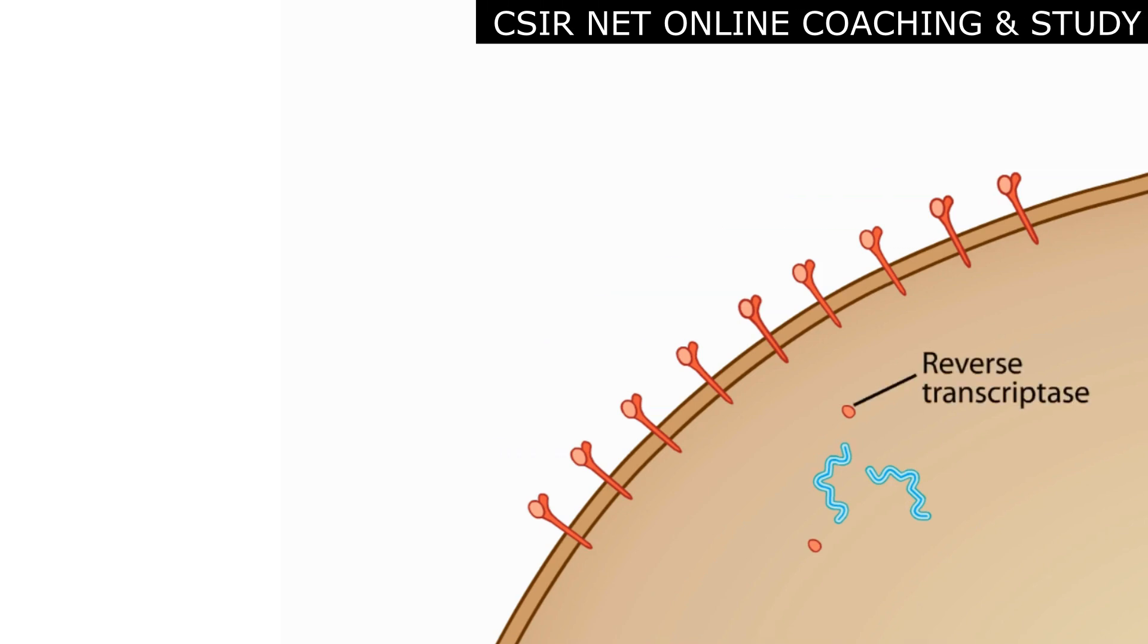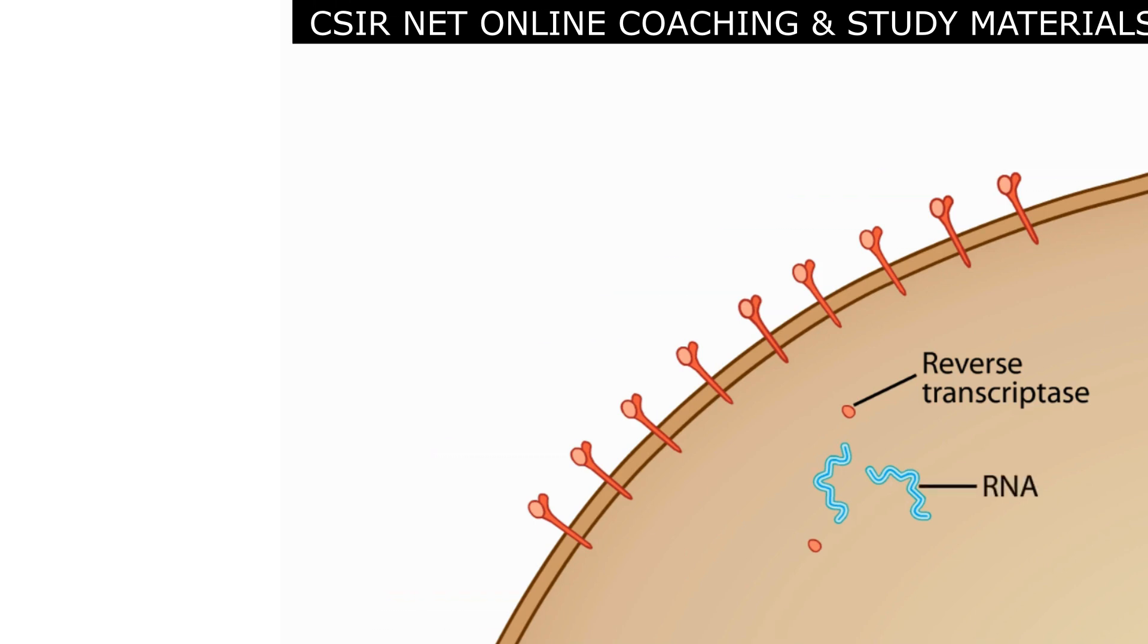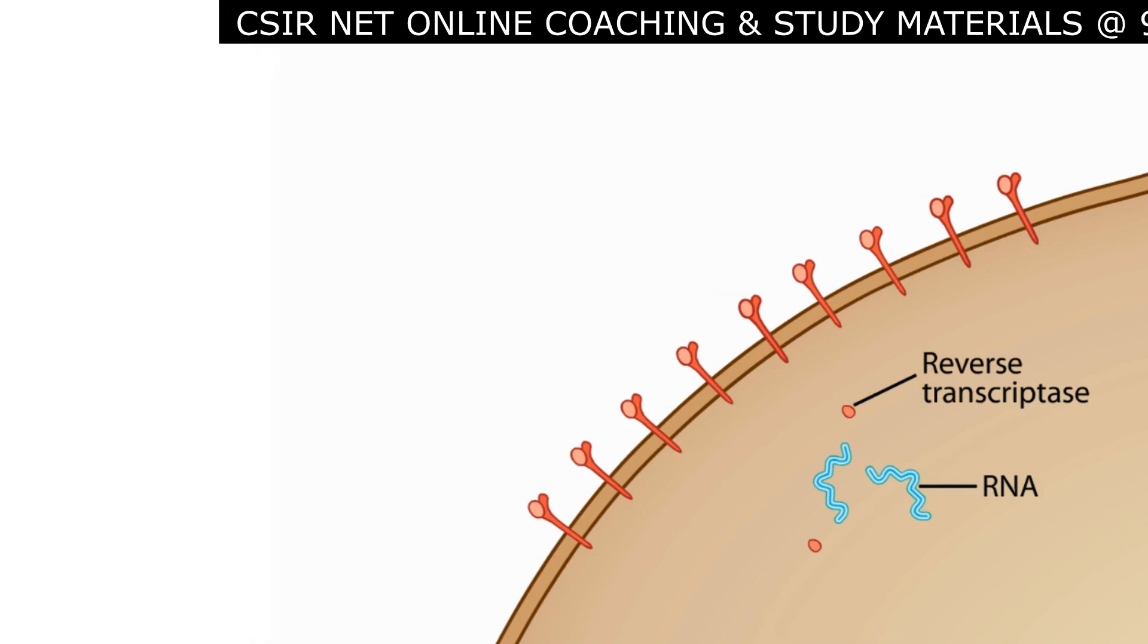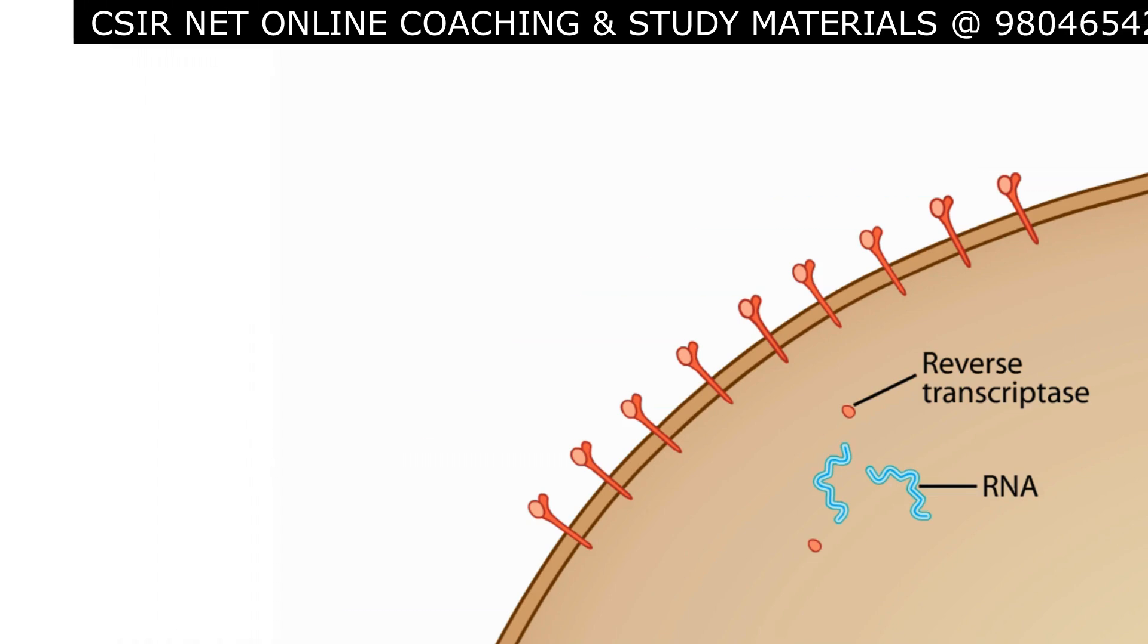Reverse transcriptase has the unusual activity to copy RNA into DNA, a reversal in the order of normal flow of genetic information. This reversal gives retroviruses their name.